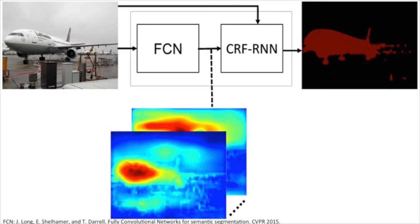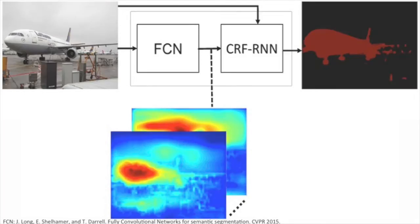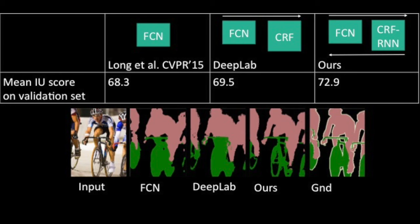our system fully integrates CRF modeling with CNN, making it possible to train the whole system end-to-end with the usual backpropagation algorithm. We apply the proposed approach to semantic image segmentation, obtaining top results on the VOC benchmark.